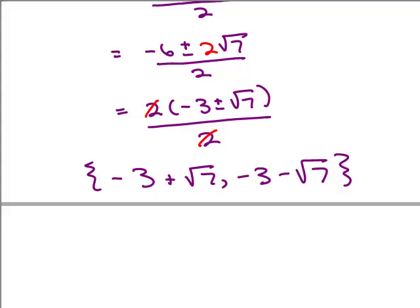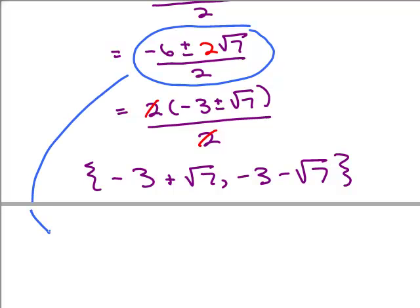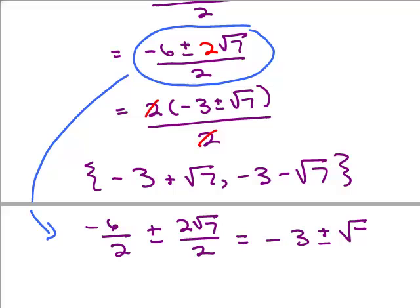You could have also taken this step right here and split the numerator up, so you could put -6/2 ± 2√7/2, and then you could just reduce each of these so it's -3 ± √7, which will lead you to the same two solutions: -3 + √7 and -3 - √7.